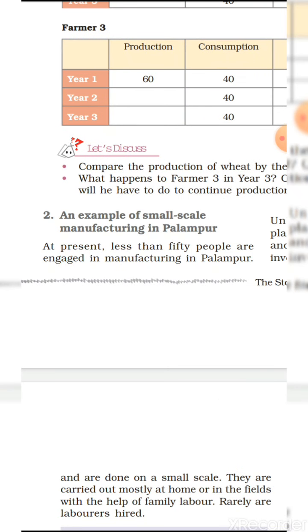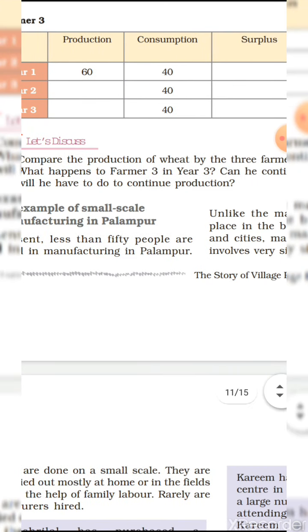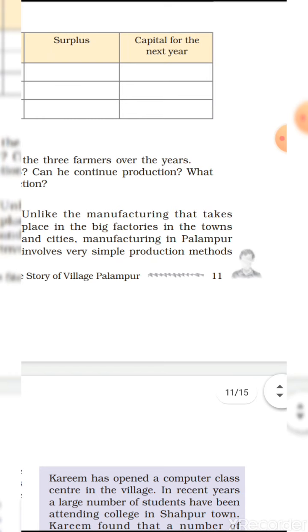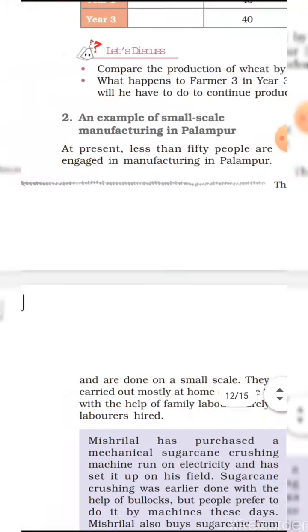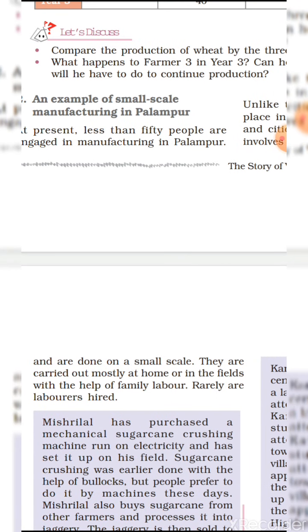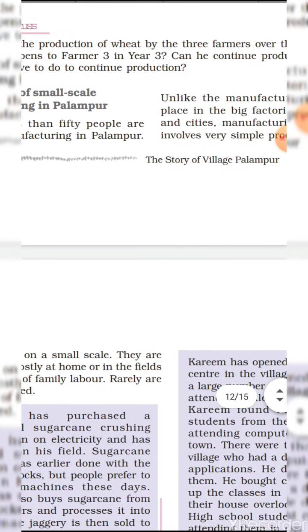Number two: An example of small-scale manufacturing in Palampur. At present, fewer than 50 people are engaged in manufacturing in Palampur. Unlike manufacturing in big factories in towns and cities, manufacturing in Palampur involves very simple production methods and is done on a small scale. It is carried out mostly at home or in the fields with the help of family labor.